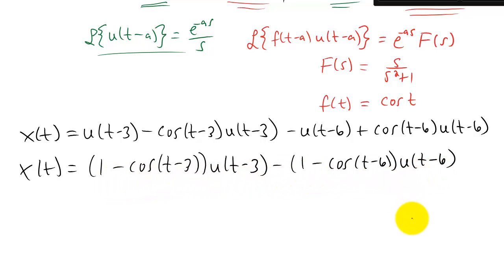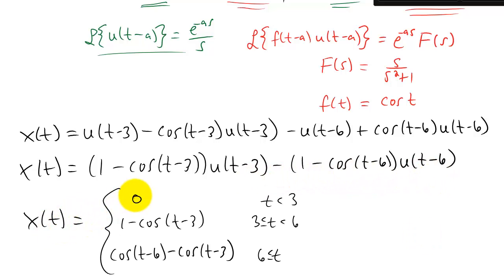And our final answer can be written as a piecewise function with three different pieces. Here's the answer written out as a piecewise function. Maybe it's a slightly more clear way to show what's actually happening. And I encourage you to look at what the graph of this thing looks like.